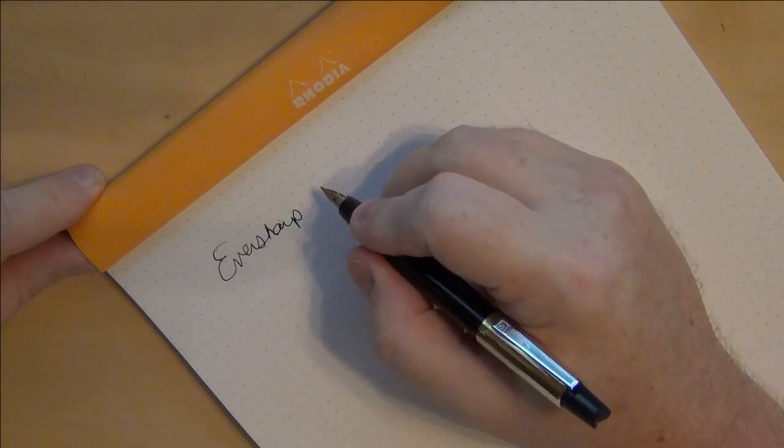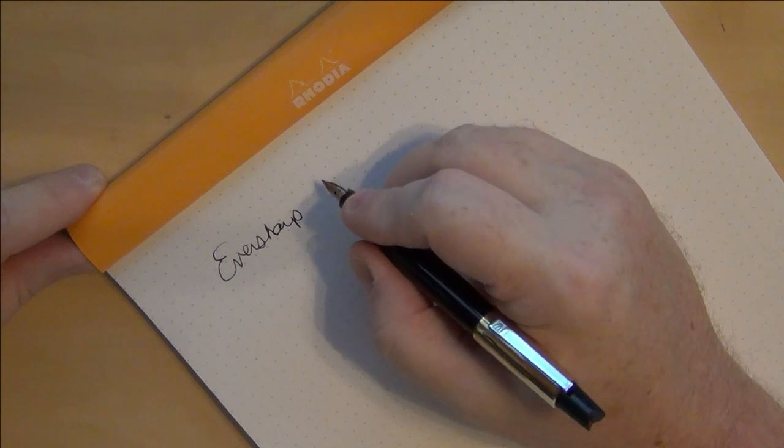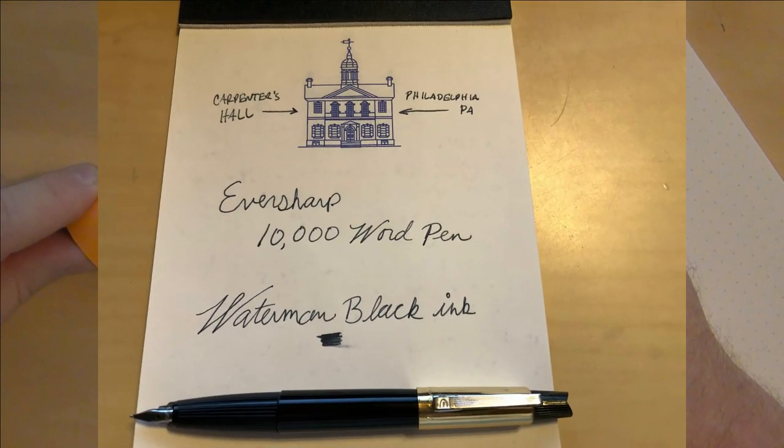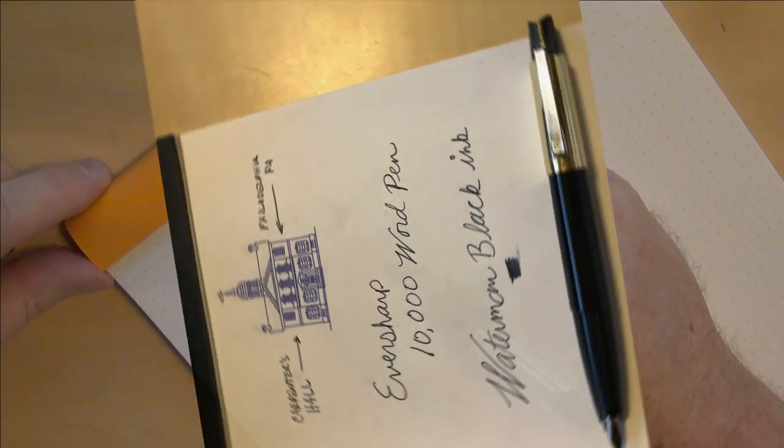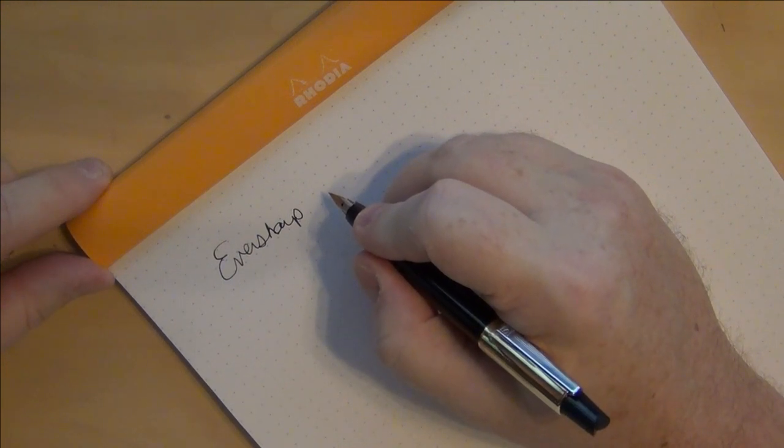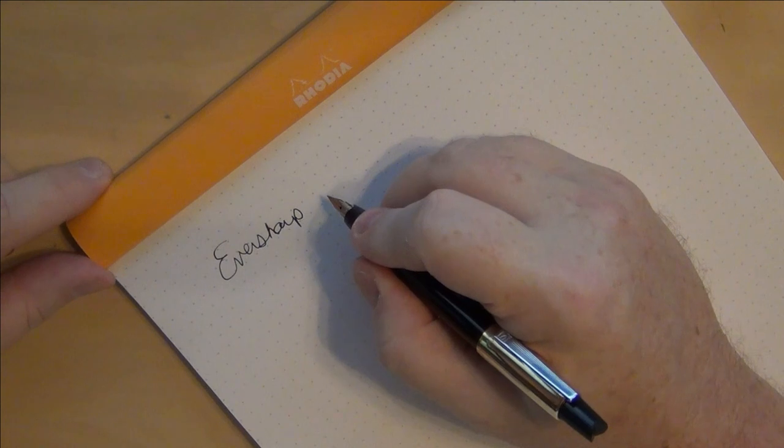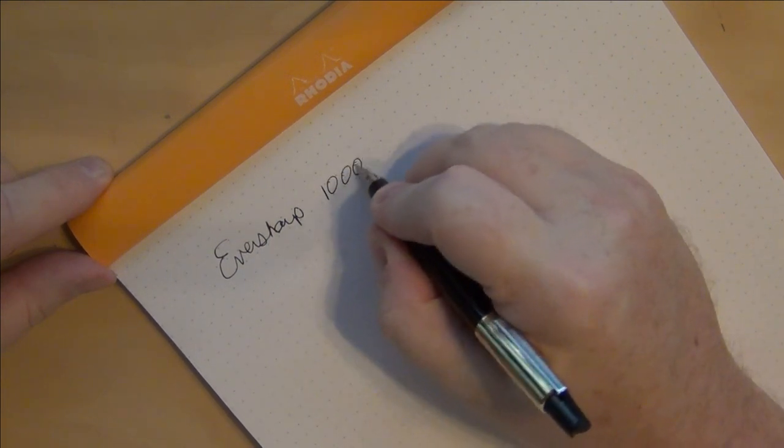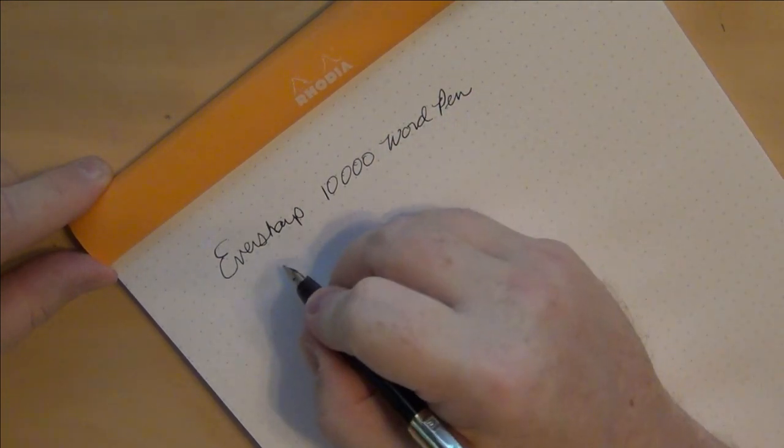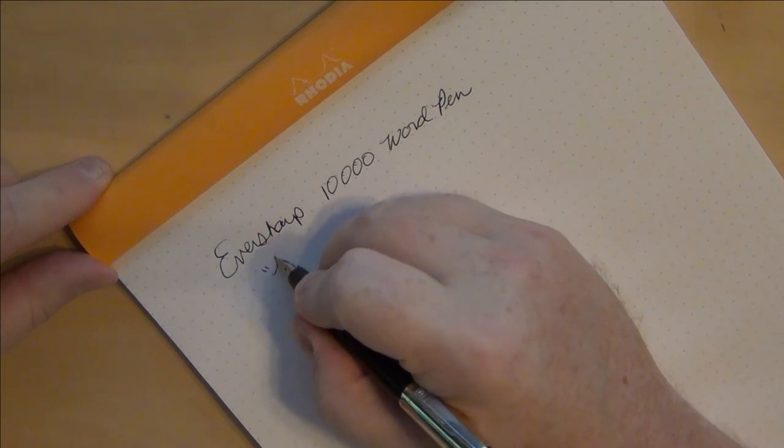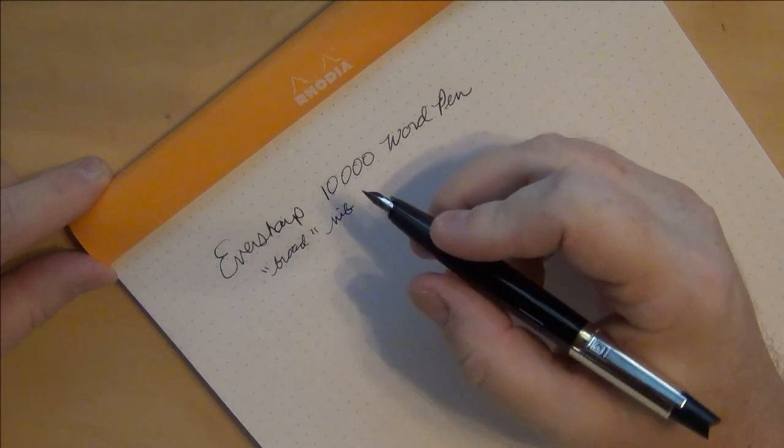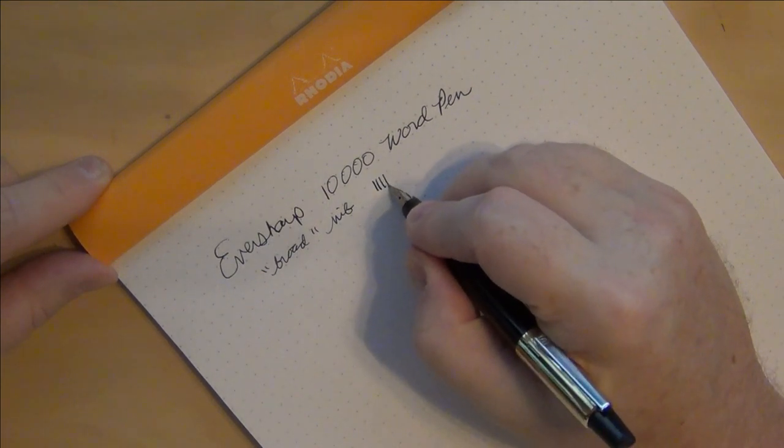I do know this pen does not like Rhodia notepad as much as it has been able to write well on some just plain old everyday notepad. Each time I've tried on a Rhodia pad, it's had kind of a hard start at first. It doesn't like Rhodia quite as much. I've run across that with a lot of pens. Not every pen, not every ink even, likes every single kind of paper. This is their 10,000 word pen. This says that it has a broad nib, but there's no way this is actually a broad. It may be stamped with broad, but it sure writes more like a fine.